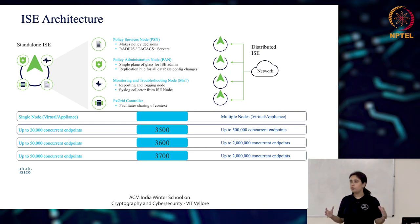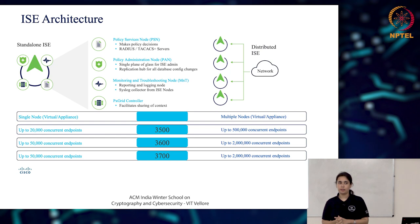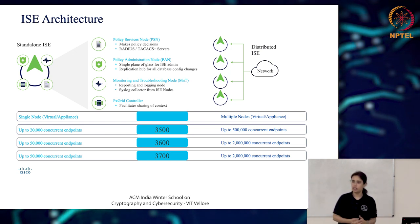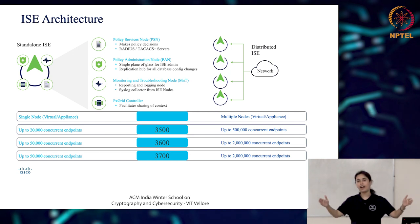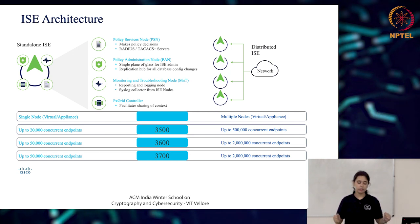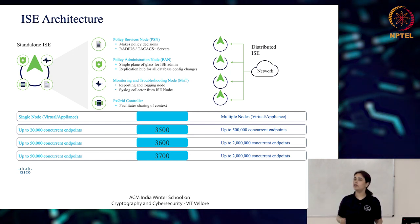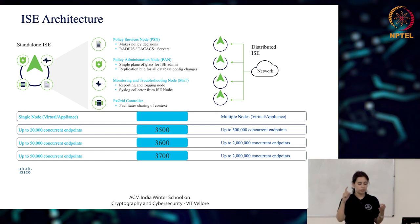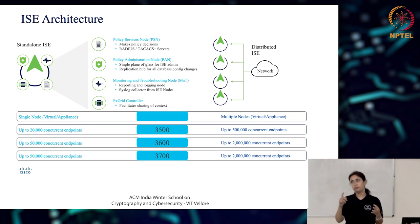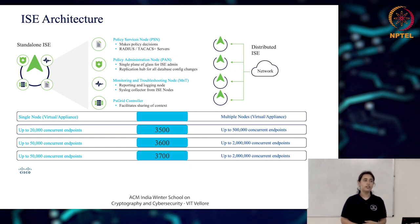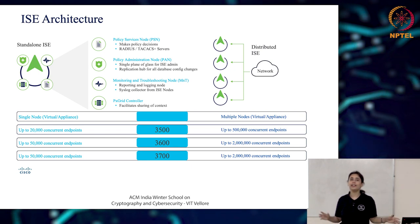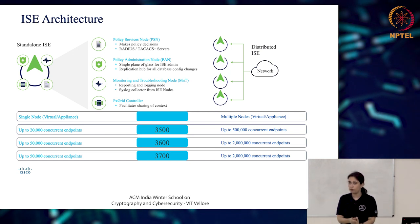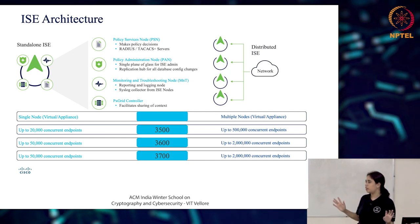There are two ways to utilize these four personas. The first basic way is if you are a small organization — you can have just one ISE box and enable all the personas on the same box. Administration, PSN, and monitoring are all on the same box. This works well for a small deployment and can be managed with just one ISE node with all personas enabled.